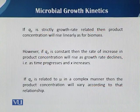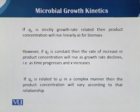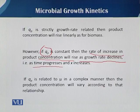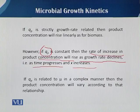If the product quotient is strictly growth related, then product concentration will rise linearly as per the biomass. However, if qp is constant, then the rate of increase in product concentration will rise as the growth rate declines. As time progresses and x increases, we can easily understand how the product quotient, or rate of product formation, is affected by x.